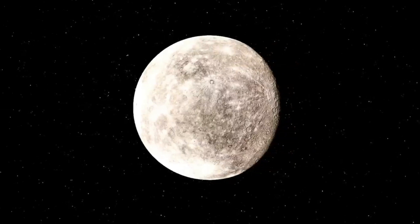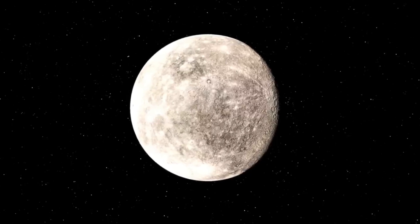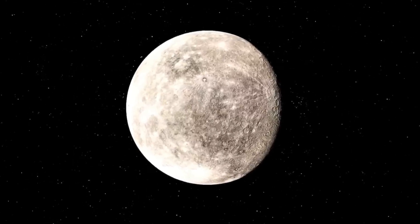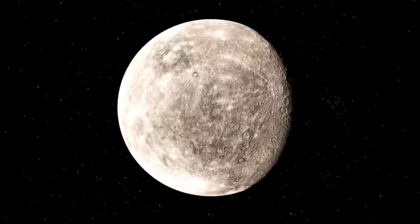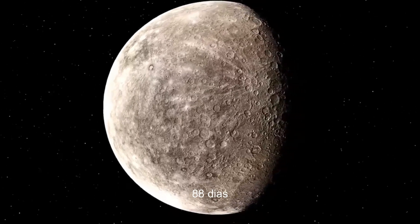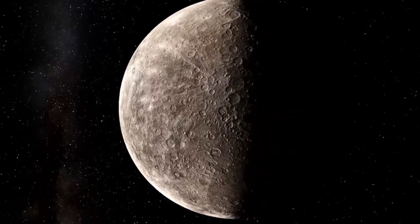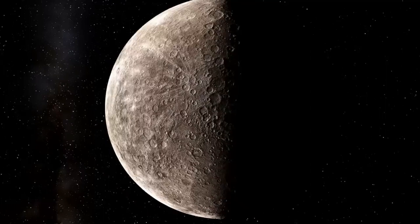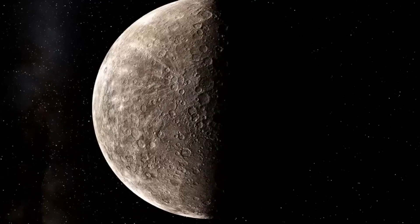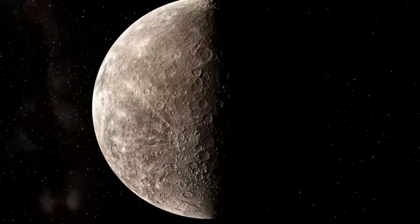Its surface is full of craters caused by asteroid and meteorite impacts. In terms of translation, Mercury is the fastest planet in the solar system. Its rotation around the sun lasts only 88 Earth days. But in compensation, Mercury takes between 58 and 59 Earth days to complete its rotation. Despite being the closest planet to the sun, it is not the hottest.